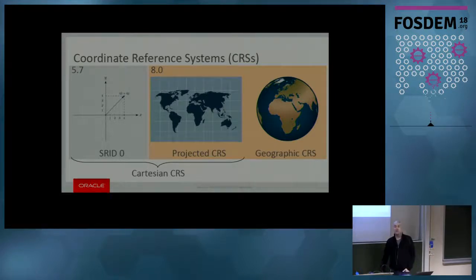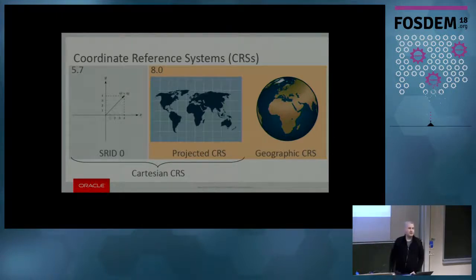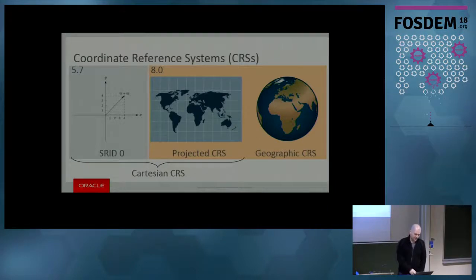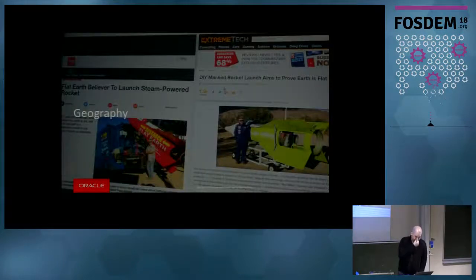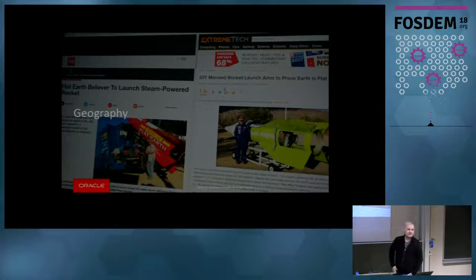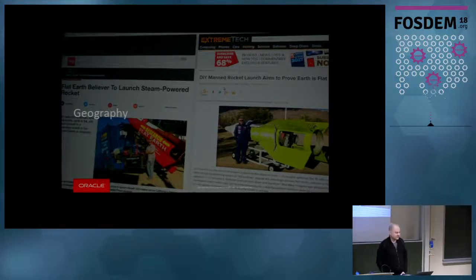Projections are supported — there's nothing surprising there. It's Cartesian, so we already had the math. Geography is a new thing. We were told that Earth is not flat in 5.7, and instead of trying to prove that it is flat, we decided we should change our model.